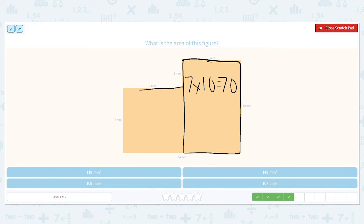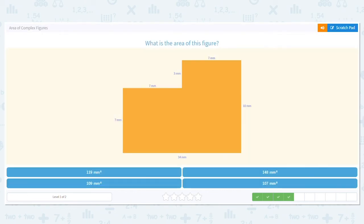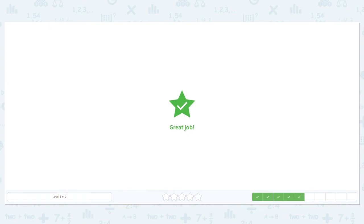And then I have a square over here. So this would be 7 times 7, which equals 49. And then I add 70 plus 49, which equals 119 millimeters squared. Next one.